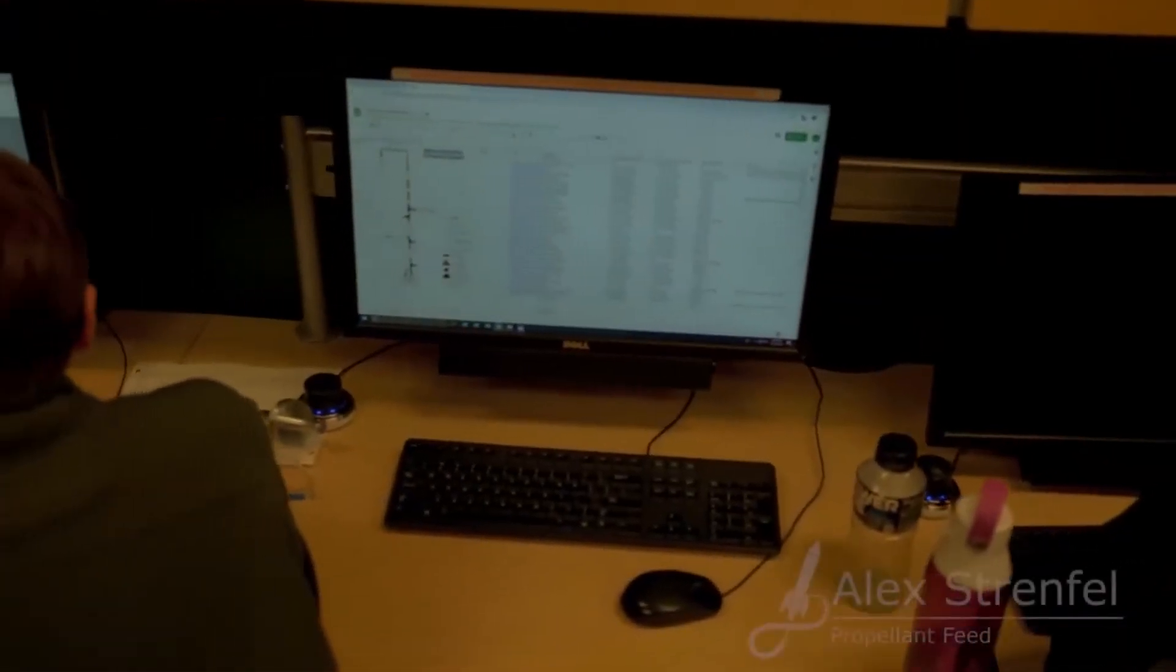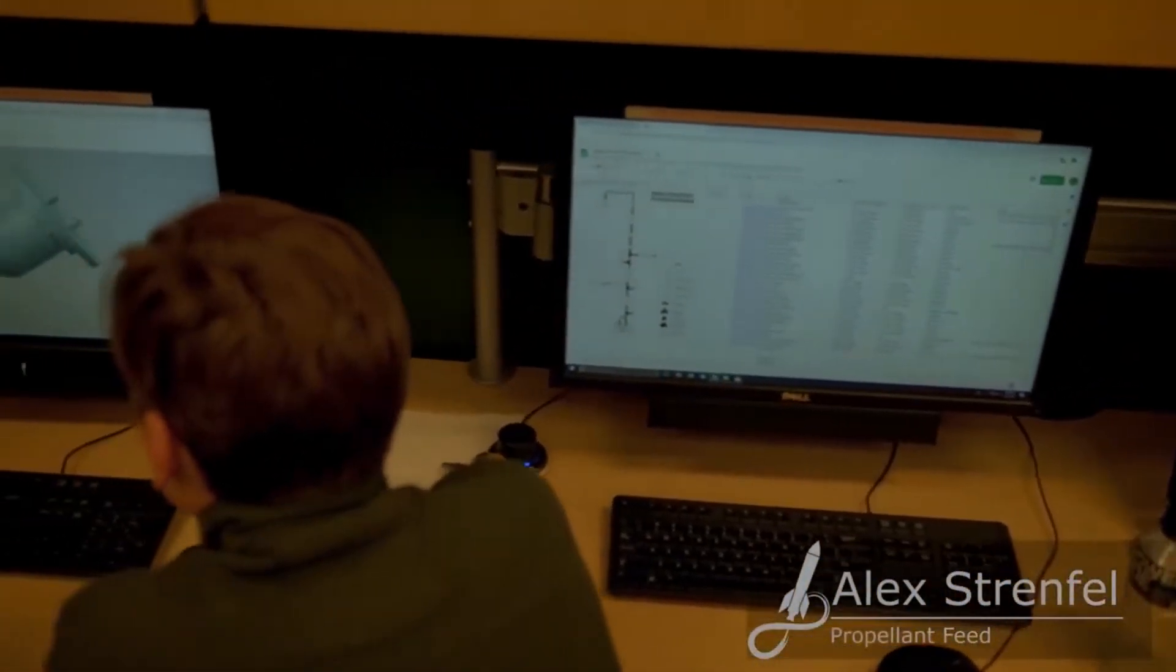First up we have our engine and propellant feed systems. Here they work to ensure our liquid rocket can get off the ground.